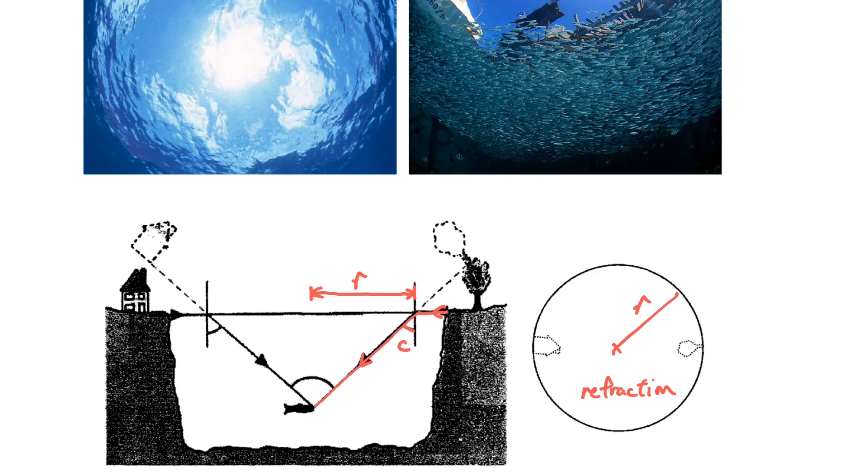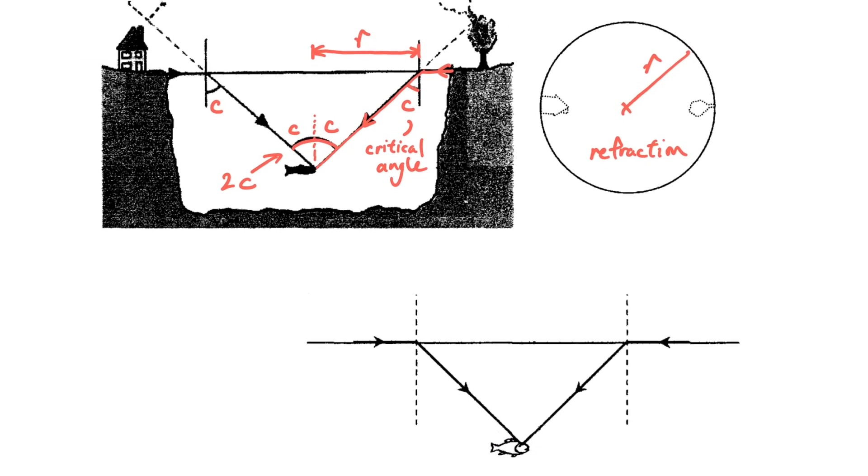So this maximum size of the circle is determined by the critical angle. When the light is just able to get down to the fish eye, it's c. And you can see this whole angle is double of c. So you can see 2c here.